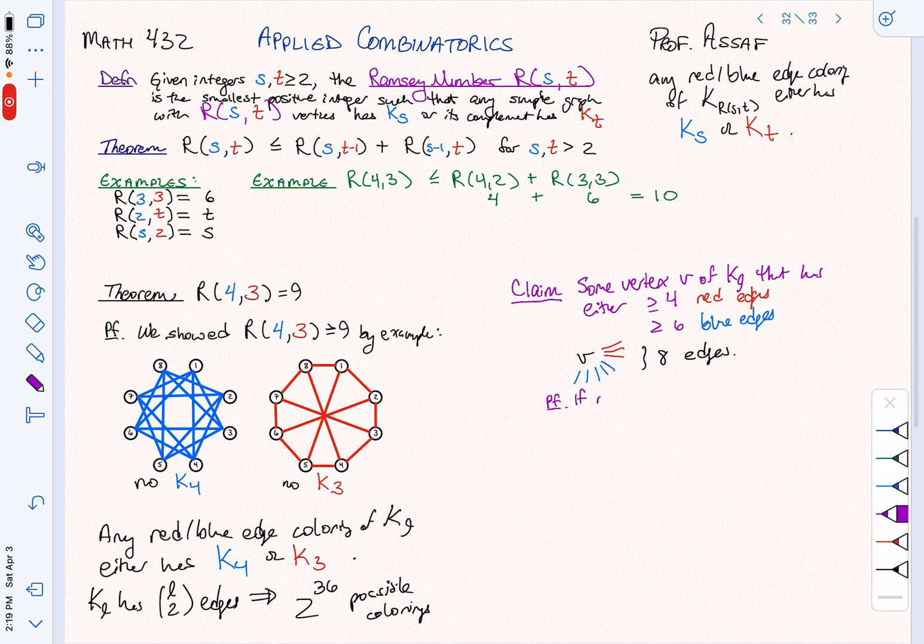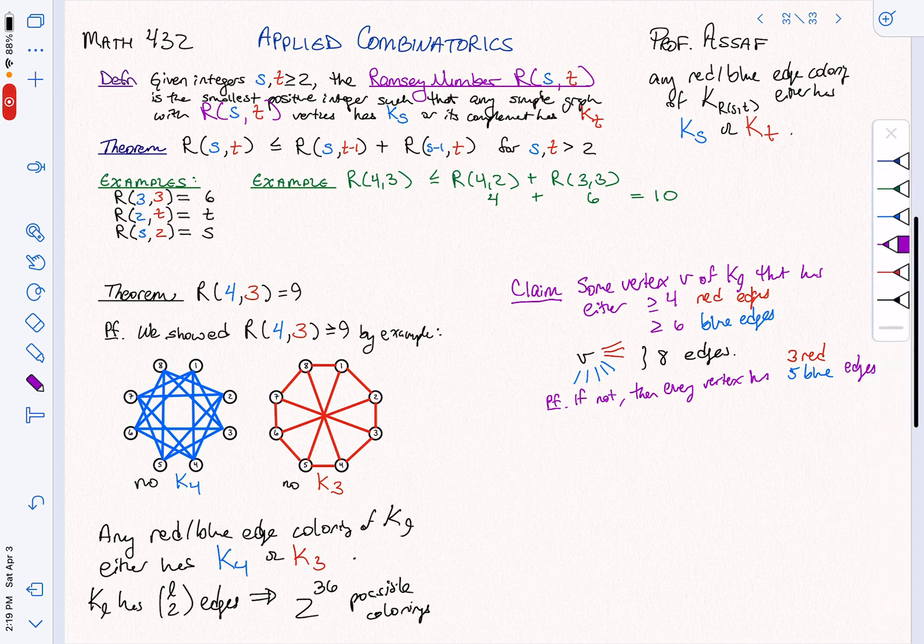We're going to have the proof of the claim. It's not that every vertex has this property. It's just that some vertex does. So if not, then we have to have the situation above. We have to have eight edges. It's pretty much the only way it can't happen. So then every vertex has three red and five blue edges, because otherwise we're going to run into trouble. Otherwise, we're going to satisfy one of these cases. If we lose a red edge, we gain a blue and we're good. If we lose a blue, we gain a red and we're good.